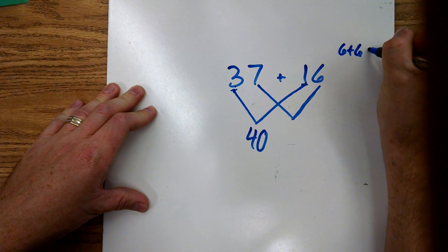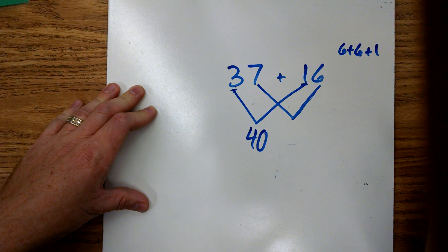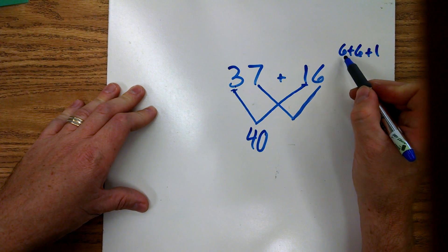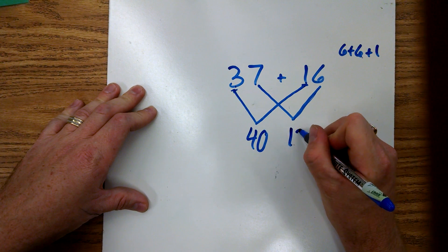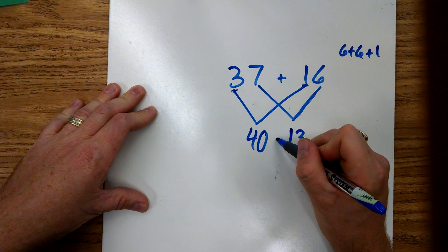If you know that six and six is twelve, seven is just that one more, so that would be thirteen.